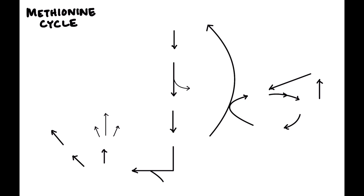What does the M stand for in VOMIT? It stands for methionine. In the VOMIT pathway video, we kind of took for granted that methionine will ultimately become propionyl-CoA, but that doesn't happen overnight — it doesn't happen without steps we need to know.